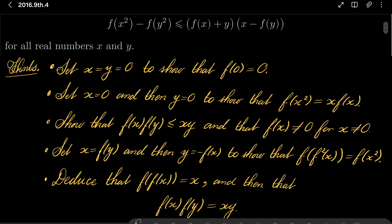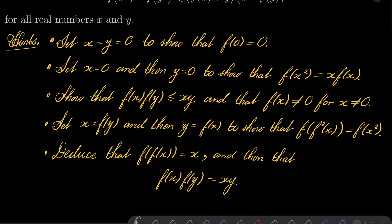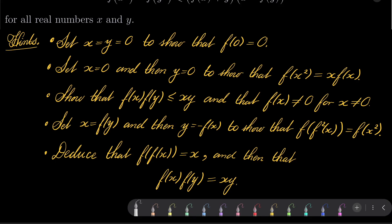Here are my hints for this problem. First set x and y to be 0 and justify that f(0) = 0. Then set x to be 0 and separately set y to be 0 to show that f(x²) = x·f(x), and in particular transform our original inequality into f(x)·f(y) ≤ xy, and show that f(x) is non-zero for non-zero arguments. Then set x to be f(y) and separately set y to be minus f(x) to show that f(f²(x)) = f(x²), and from there deduce that our function is an involution, so f(f(x)) = x. That will allow you to show that f(x)·f(y) = xy and lead you to a solution. Give this problem a try and I will see you in just a minute.